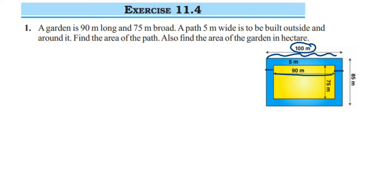Similarly, we know the breadth is 75 meters. The bottom is again 5 meters and the top is also 5 meters. So 75 plus 5 plus 5 is 85 meters. This is how we get the length and breadth of the garden including the path.